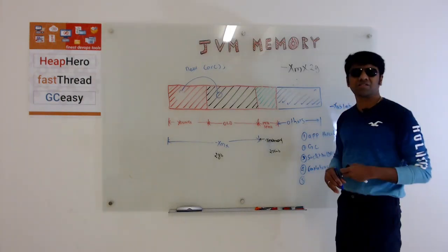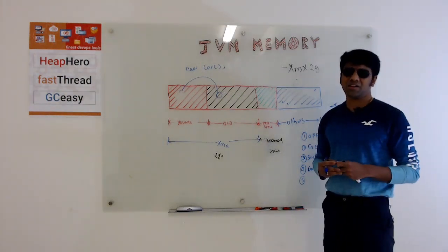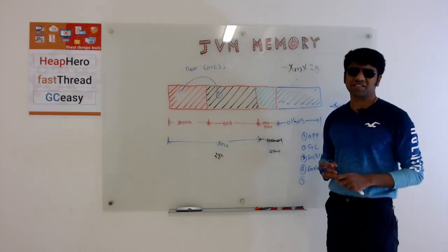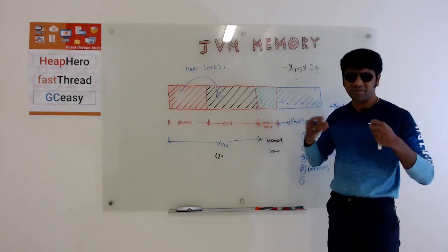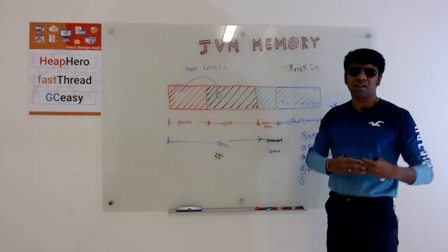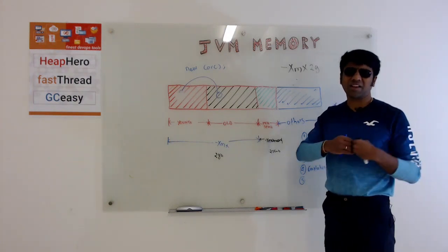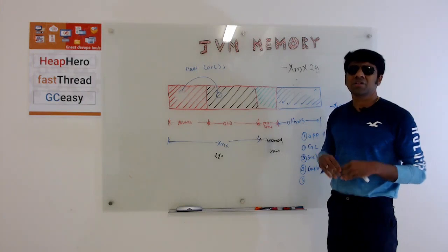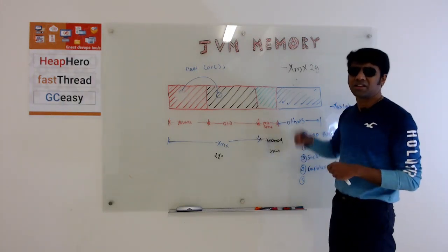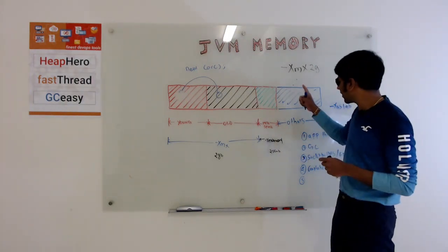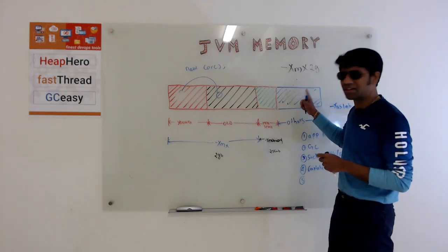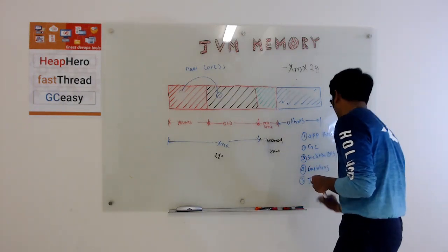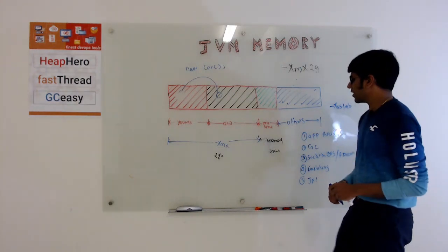If your application is using JNI—most modern applications don't use JNI—JNI is a mechanism through which your Java contacts or makes a call to your C or C++ process which is running outside. If you're using JNI, that also takes up memory and goes into this others region.